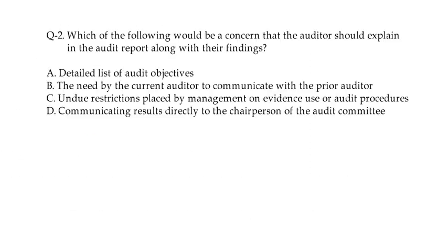Question No. 2: which of the following would be a concern that the auditor should explain in the audit report, along with their findings? Option A, detailed list of the audit objective. Option B, the need by the current auditor to communicate with the prior auditor. Option C, undue restriction placed by the management on evidence, user, or audit procedure. And option D, communicating results directly to the chairperson of the audit committee.